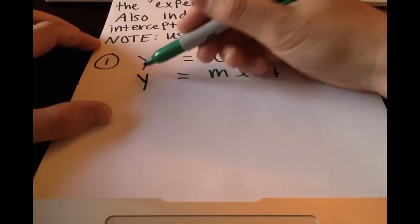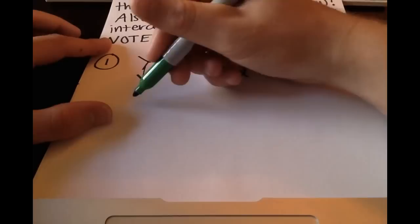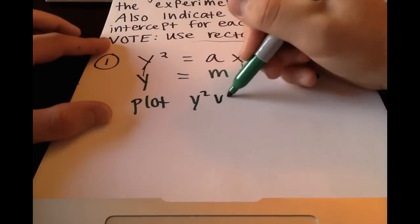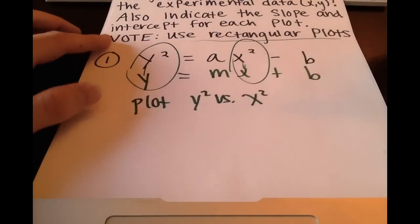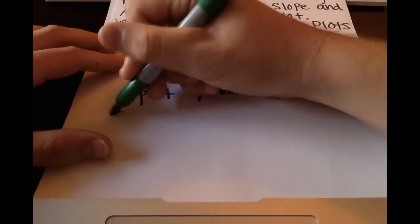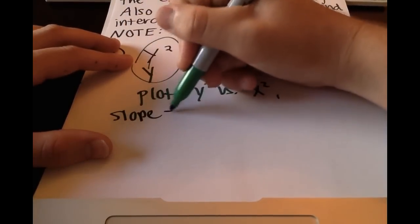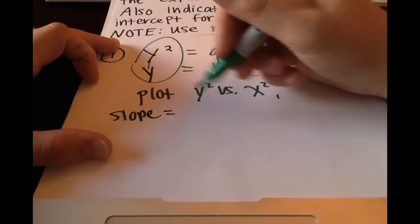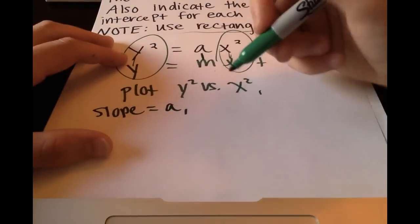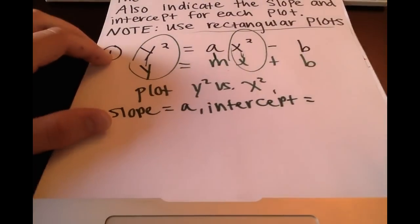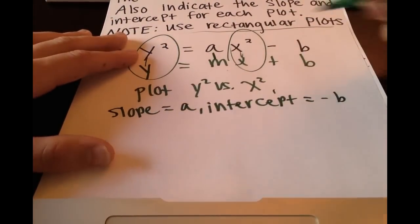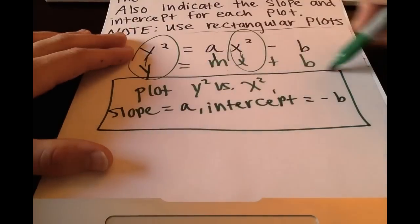In this case, correlating the values, we would plot y² versus x² because you can see that correlation. Our slope would be a and our intercept would be -b. That wasn't too difficult because it was already in the form y = mx + b.